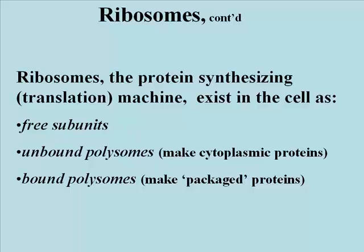Bound polysomes are attached to rough endoplasmic reticulum and the outer membrane of the nuclear envelope in eukaryotes, and are the site of synthesis of proteins destined to leave the cytoplasm — what we would call packaged proteins. Think about this question: where might bound polysomes be found in a bacterium, in prokaryotes?